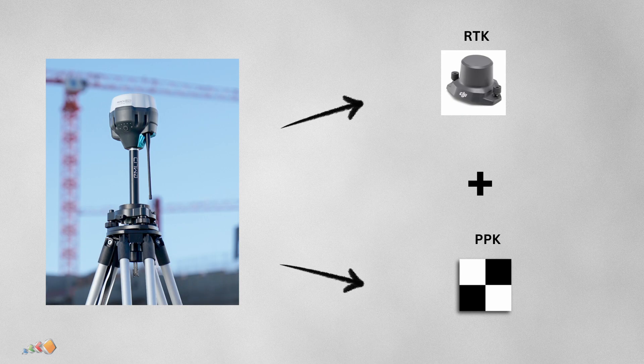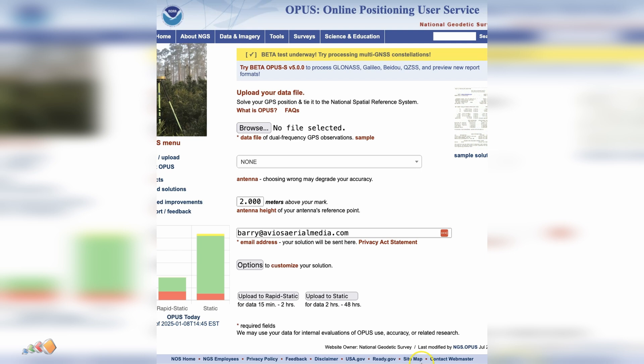Once you're happy with the results, you can take the coordinates provided by OPUS, enter those into your MLID receiver, and then turn it into an NTRIP base station. And that's how you create a known point using the MLID RS3 and OPUS. It's a reliable offline solution for achieving survey-grade accuracy even in remote locations.